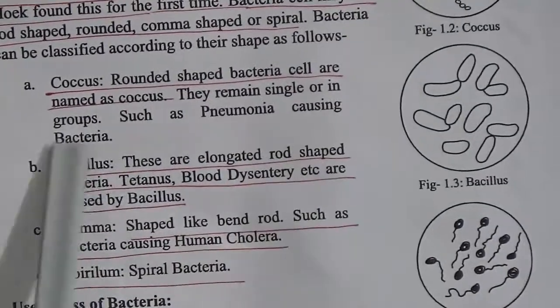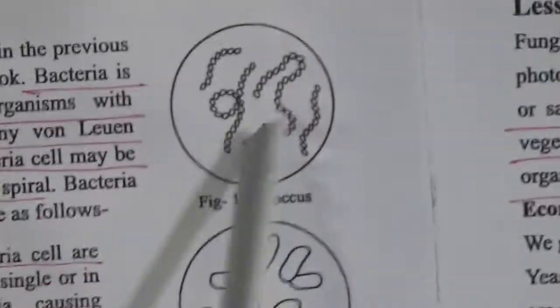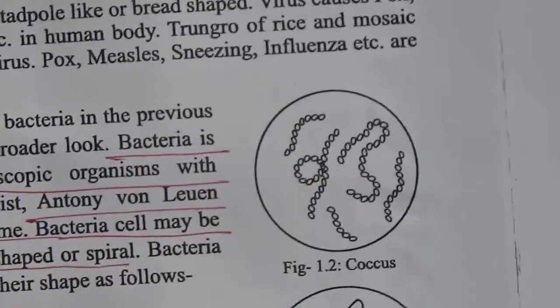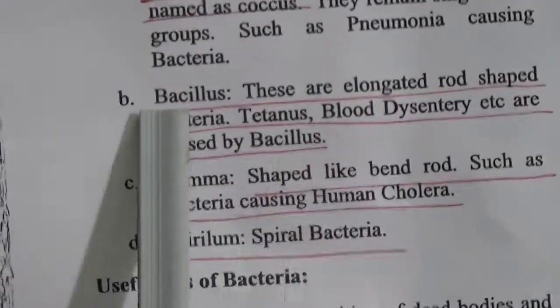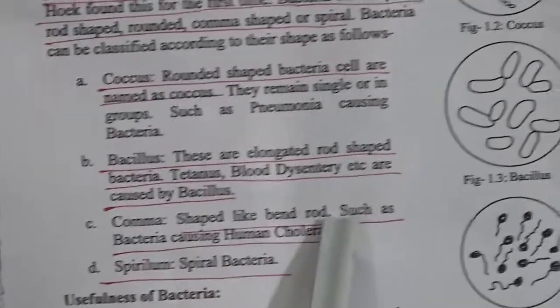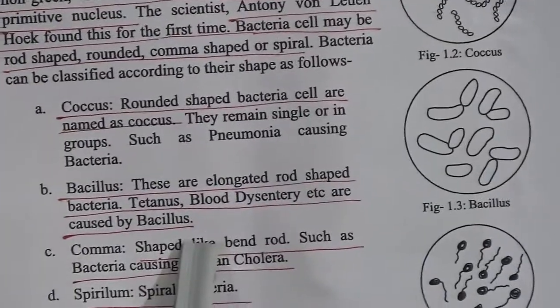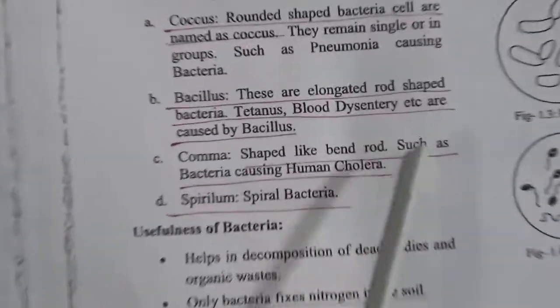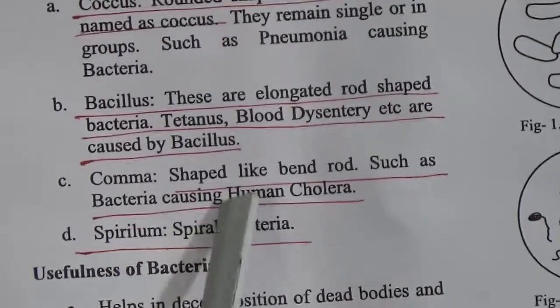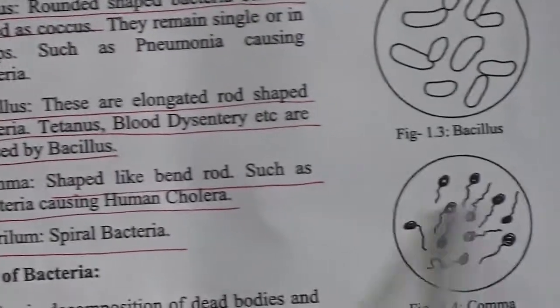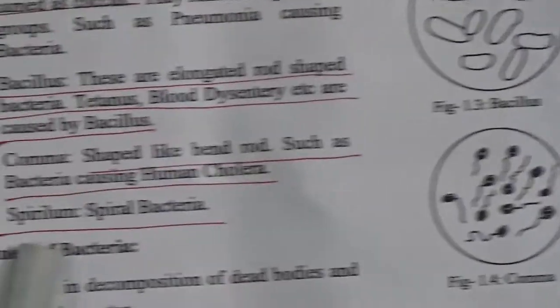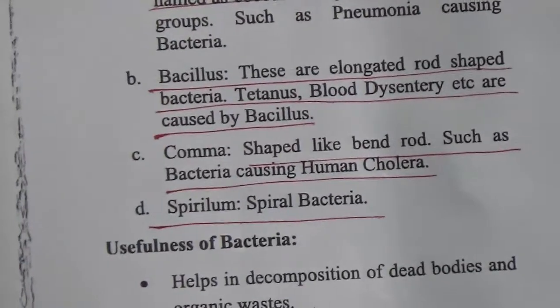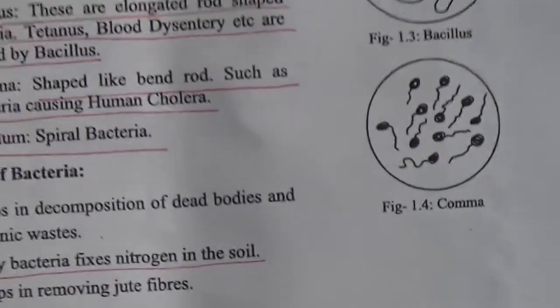Coccus: rounded-shape bacteria cells are named as coccus; they remain single or in groups — such as pneumonia-causing bacteria. Bacillus: these are elongated rod-shaped bacteria; tetanus, blood dysentery, etc. are caused by bacillus. Comma: shaped like a band rod, such as the bacteria causing human cholera. Spirillum: spiral bacteria.